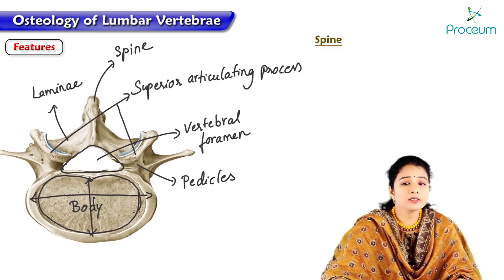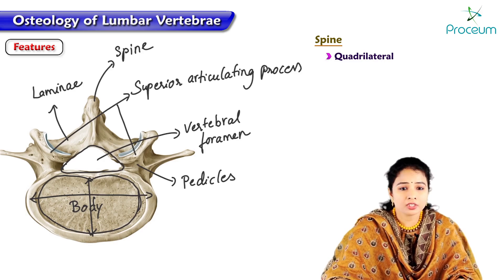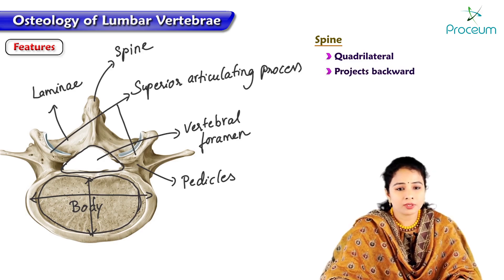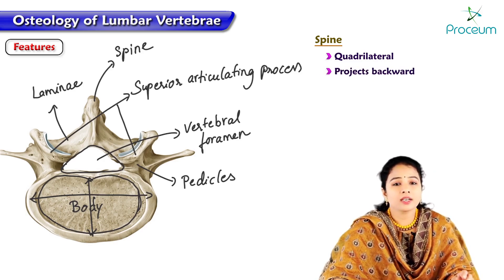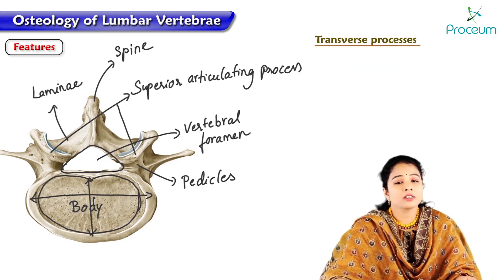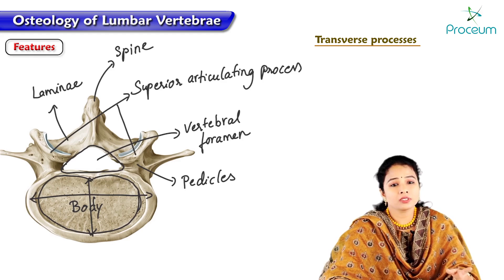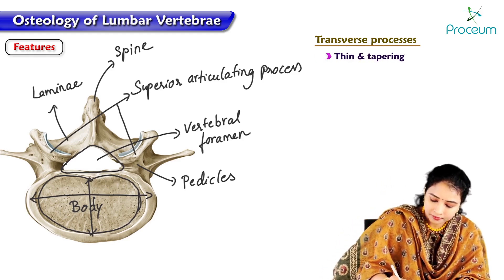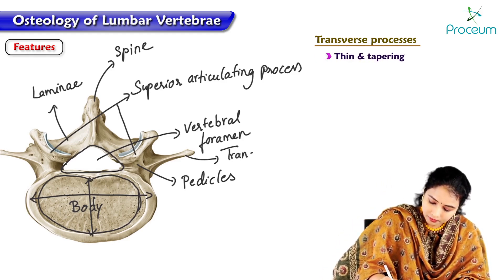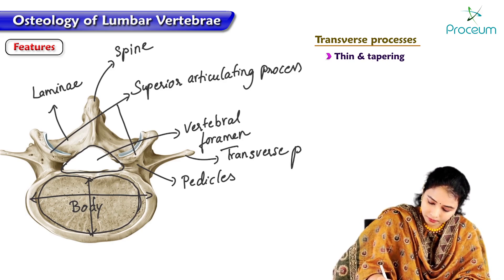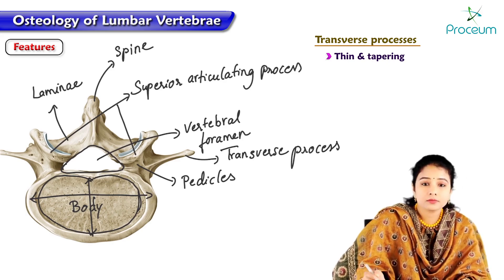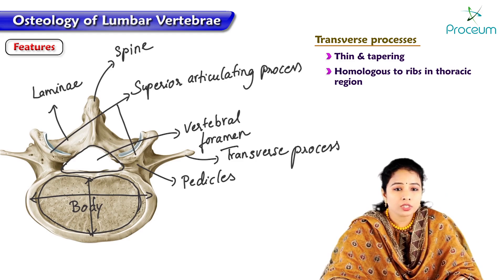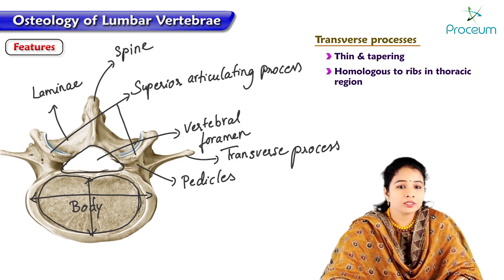The spine is quadrilateral in shape and projects backwards. The transverse process is thin and tapering, and they are homologous to the ribs in the thoracic region.